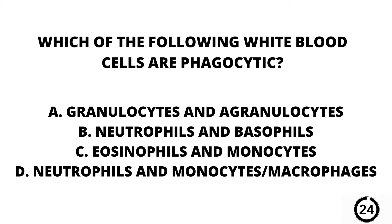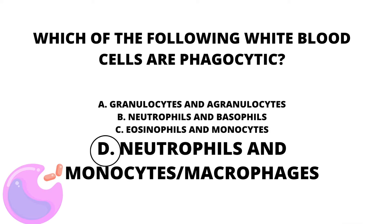Question number nine. Which of the following white blood cells are phagocytic? A. Granulocytes and agranulocytes. B. Neutrophils and basophils. C. Eosinophils and monocytes. Or D. Neutrophils and monocytes/macrophages. Our answer here is D. Neutrophils and monocytes or macrophages.